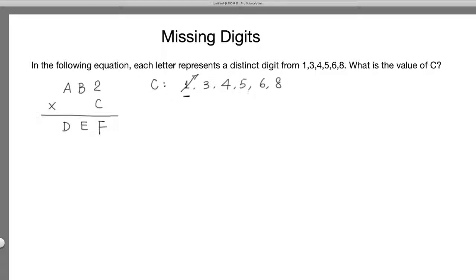Can C be 5? Well, 2 times 5 ends with 0, so it cannot be 5. Can C be 6? 2 times 6 ends with 2. Okay, impossible.